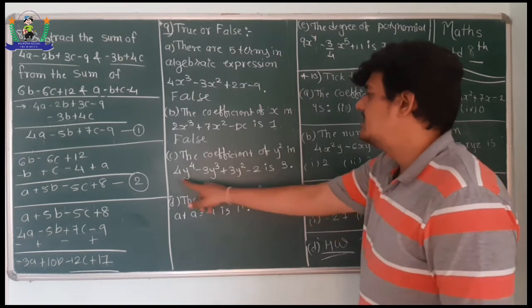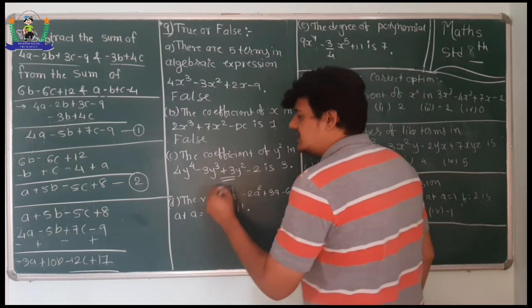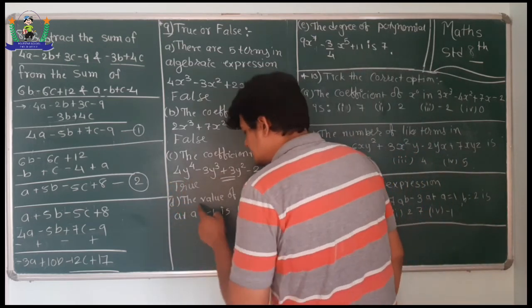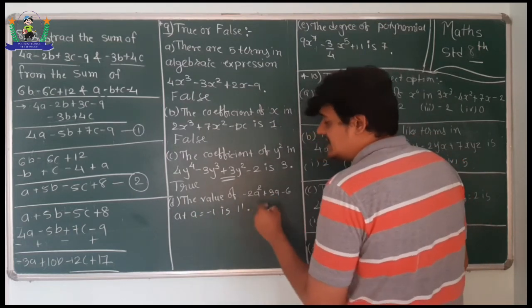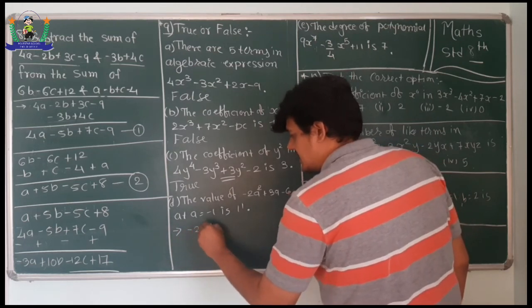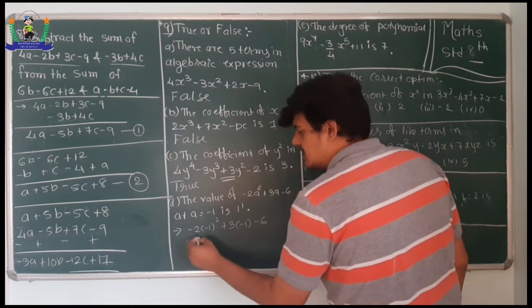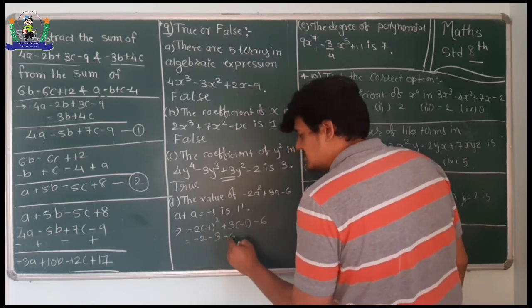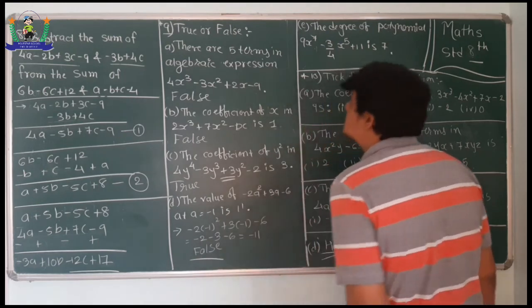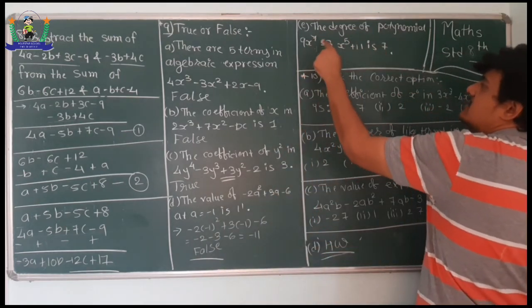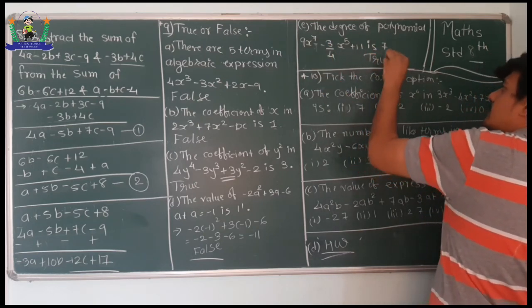Third: the coefficient of y² in 4y⁴ minus 3y³ plus 3y² minus 2 is 3 - yes, it is plus 3, so this is True. Fourth: the value of minus 2a² plus 3a minus 6 at a equals minus 1 is 11 - substituting gives minus 2 minus 3 minus 6 equals minus 11, not plus 11, so this is False. Fifth: the degree of 9x⁷ minus (3/4)x⁵ plus 11 is 7 - highest power is 7, so this is True.